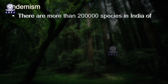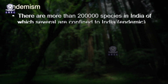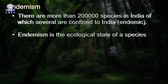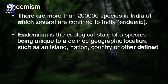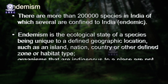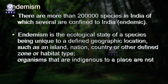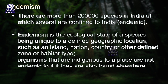Endemism is the ecological state of a species being unique to a defined geographic location, such as an island, nation, country, or other defined zone or habitat type. There are more than 2 lakh species in India, of which several are confined only to India — that is, they are endemic to India. Organisms that are indigenous to a place are not endemic to it if they are also found elsewhere.